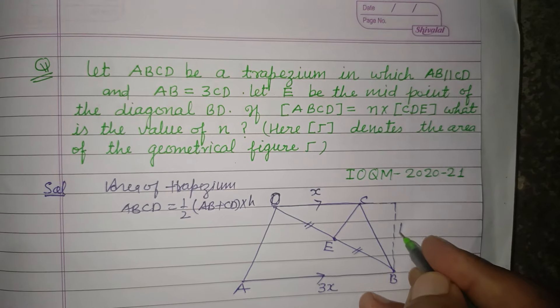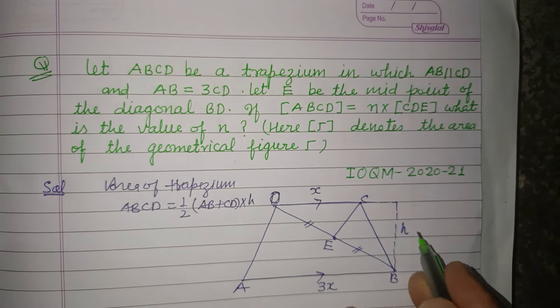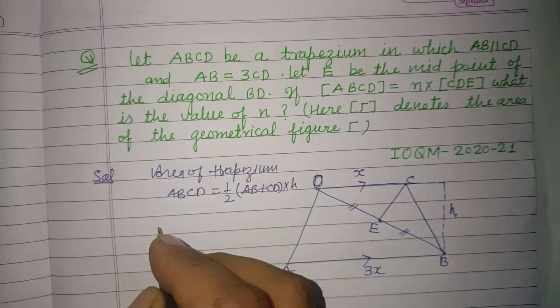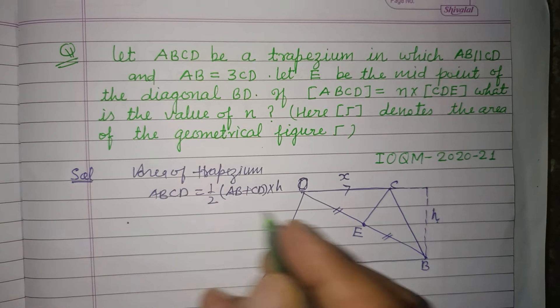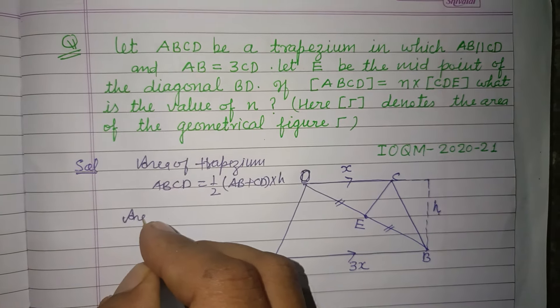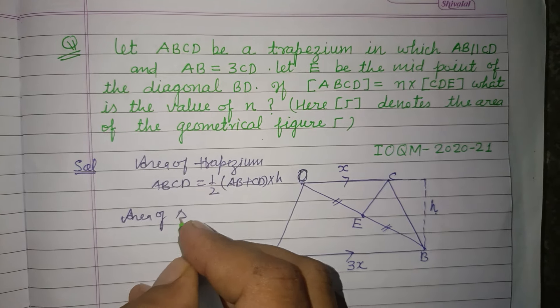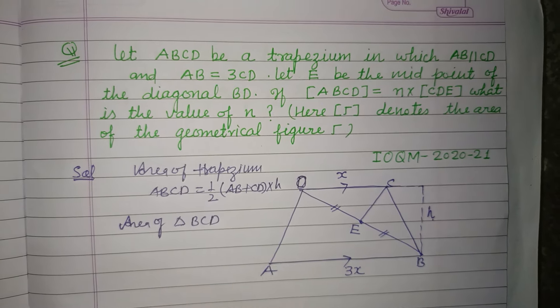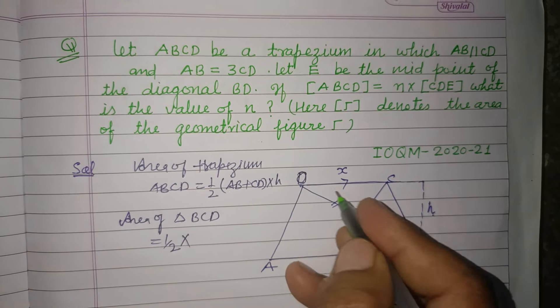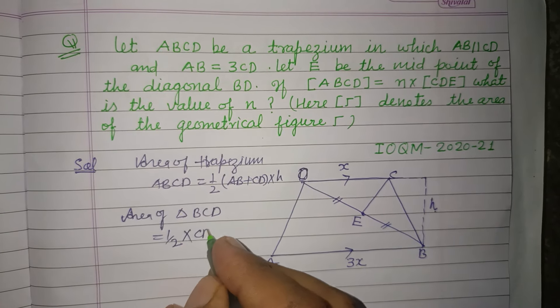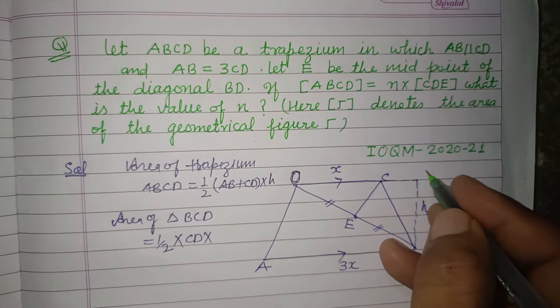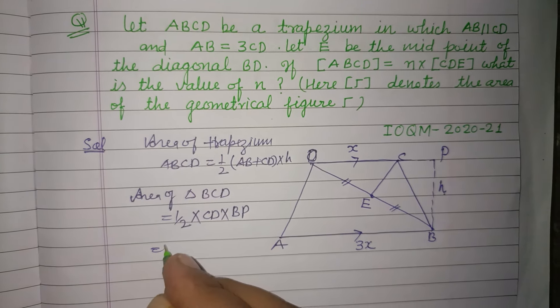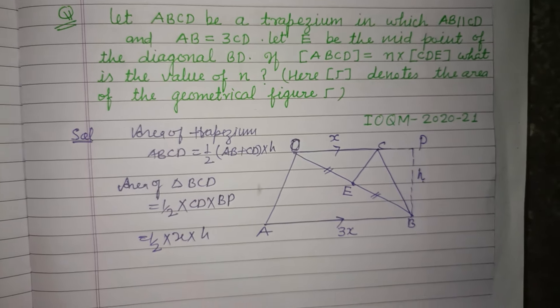So let the height of this triangle also be h, and this is also the height of the trapezium. So here, area of triangle BCD equals half base CD into height, that is h, so half x into h.